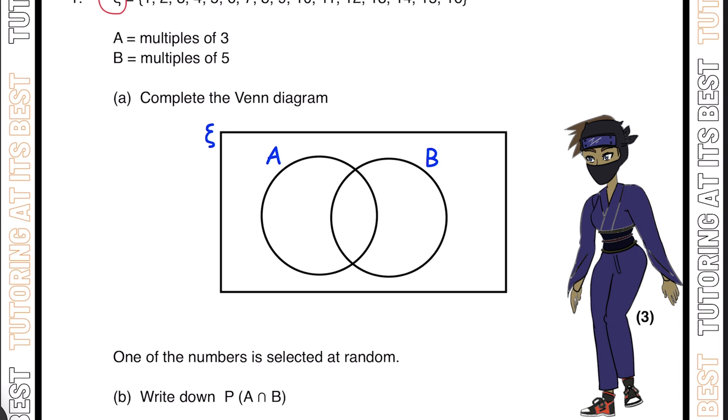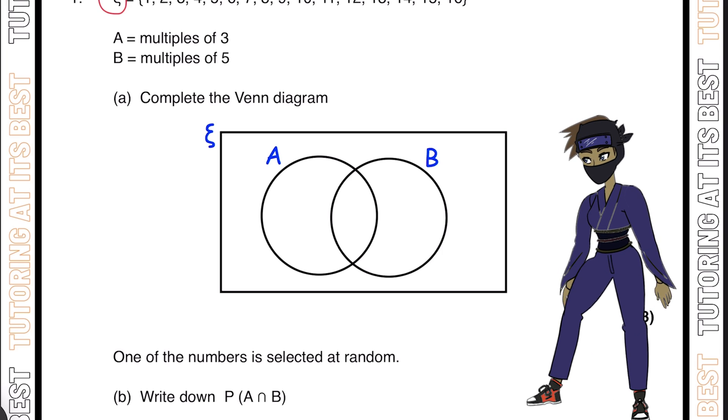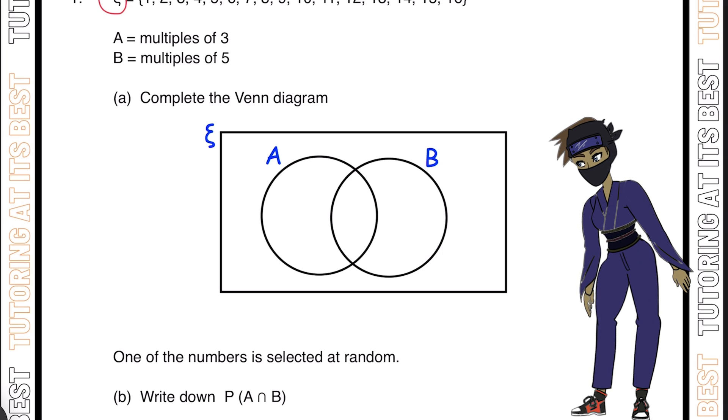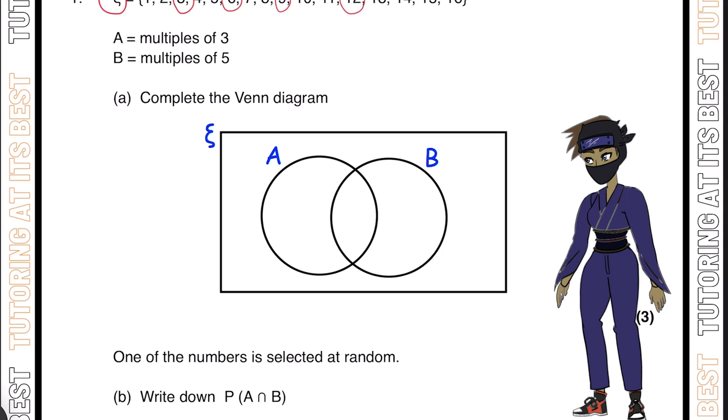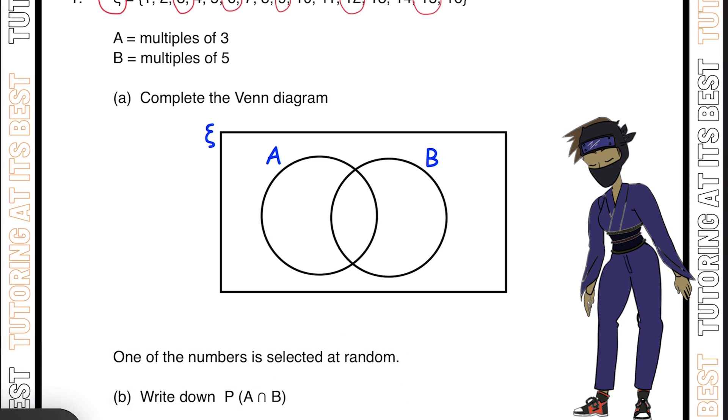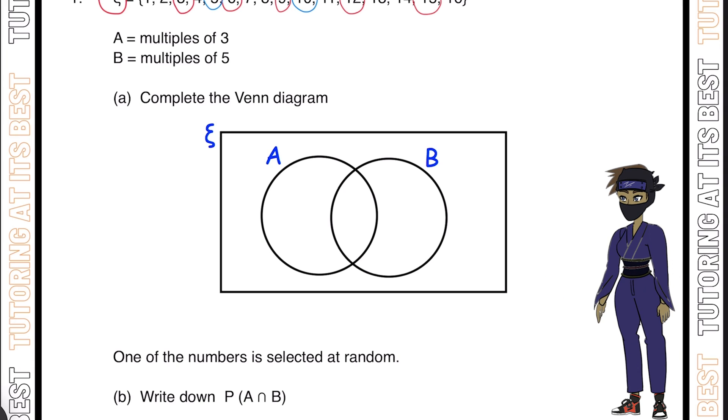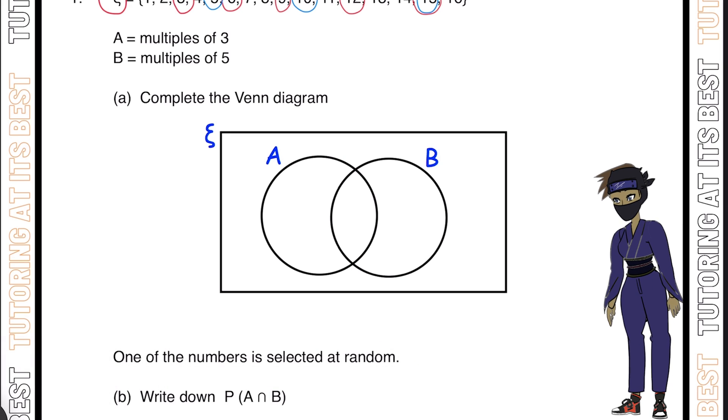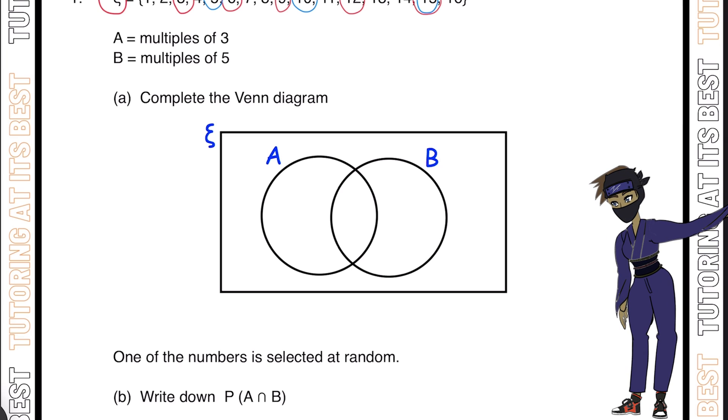So we're going to start off by finding out what is common between A and B. A has multiples of 3, so I'm going to highlight this in red here: 3, 6, 9, 12, and 15. Then I'll take blue and highlight the multiples of 5. As you may have noticed, we have a red and a blue within the number 15. That means A and B both share that number, so we'll put that in the center.